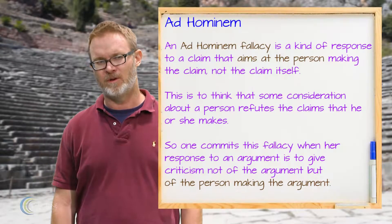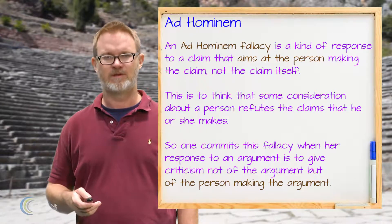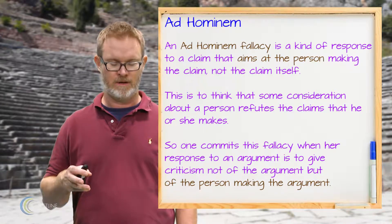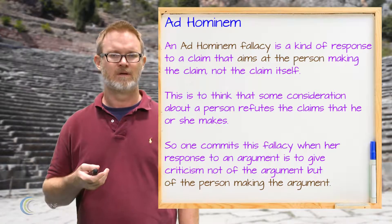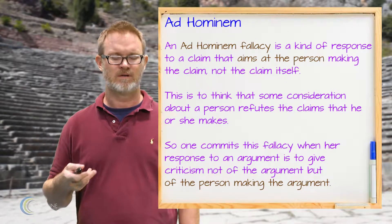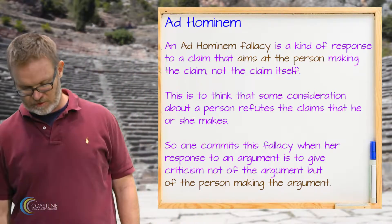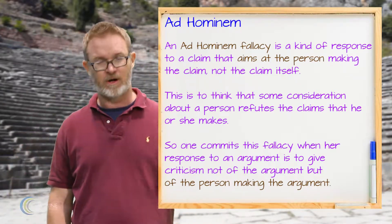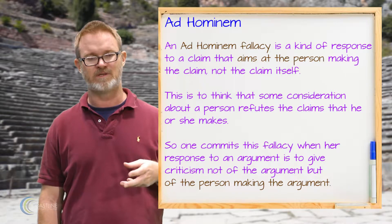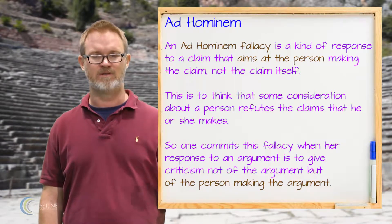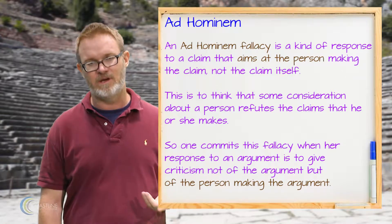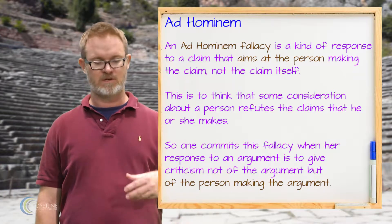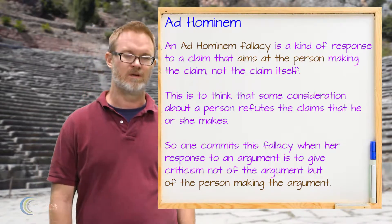Hi, my name is David Kelsey and today we're going to be talking about a particular type of fallacy in reasoning called the ad hominem argument. Ad hominems are essentially meant to confuse the direction or aim of a response — an objection. So for example, if I was debating someone and they made an argument on a position, and my response was not to attack the position or their argument, but instead them — maybe something about them personally — that would be an ad hominem. It's to confuse the man with the position.